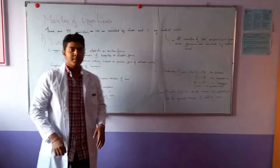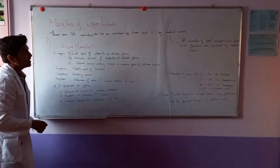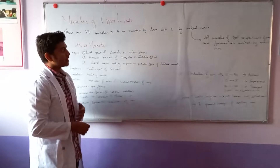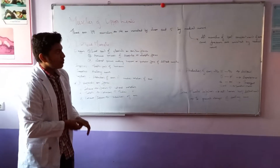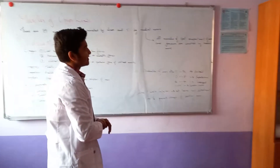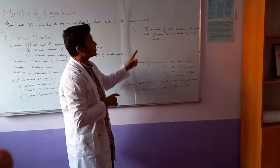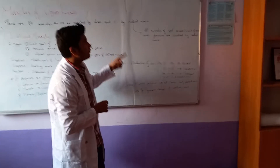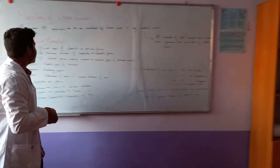I am going to talk about the topic muscles of the upper limb. There are 19 muscles — 14 are innervated by the ulnar nerve and 5 by the medial nerve. All muscles of the posterior compartment of the arm and forearm are innervated by the radial nerve.